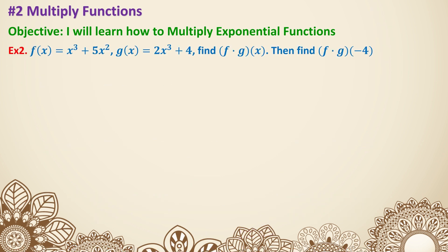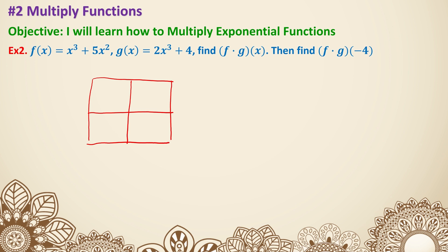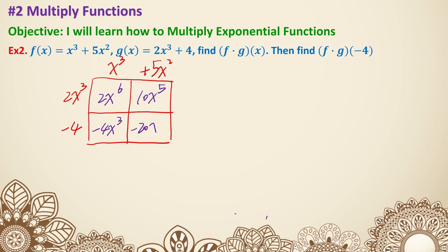Example 2. This time I'm going to use the box method. The first function has two terms and the second function also has two terms, so I need to draw a 2 by 2 box. The first function on top: x cubed plus 5x squared. The second function on the side: 2x cubed and plus 4. Let's multiply: 2x cubed times x cubed is 2x to the sixth power; 2x cubed times 5x squared is 10x to the fifth power; negative 4 times x cubed is negative 4x cubed.